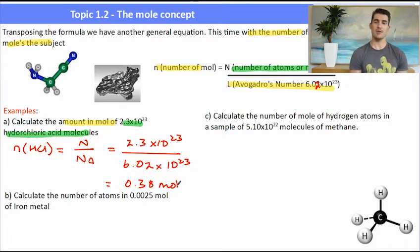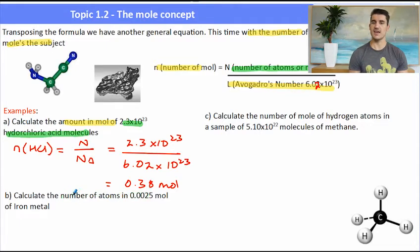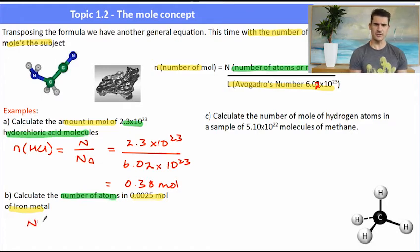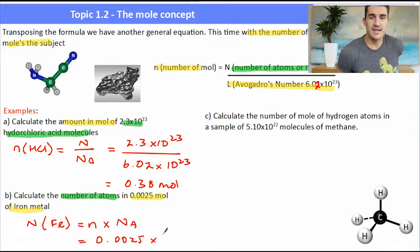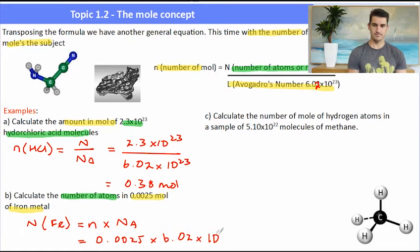Calculate the number of atoms in 0.0025 mole of iron metal. That one uses the formula from before: big N = n × Nₐ. We've got the number of moles, 0.0025, which has two significant figures — the zeros before the number don't count. Multiply by Avogadro's number and we get our number of atoms: 1.5 times 10 to the 21 atoms.